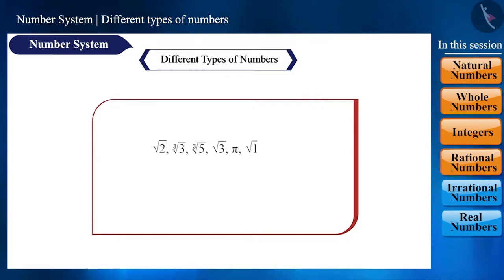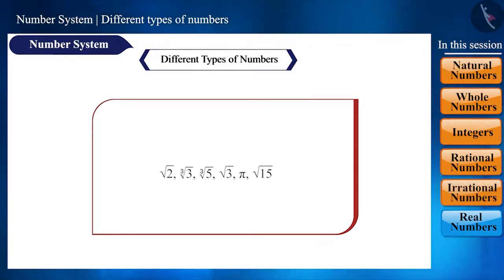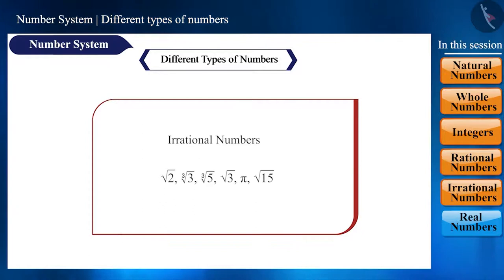And we call such numbers as irrational numbers. We represent them with the symbol Q'. Friends, are you thinking that the square root and cube root of all numbers are irrational numbers?